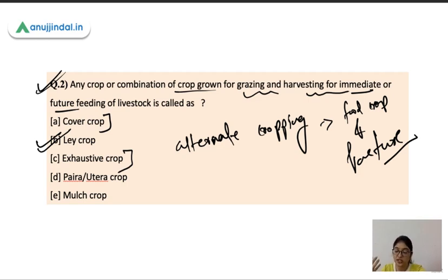Then Paira-Utera crops are your residual crops which are mostly sown before the harvesting or few days before the harvesting of your paddy crop. These are basically sown to utilize the residual moisture of the paddy fields. Then we have mulch crop. The main purpose of mulching is to prevent evaporation losses, stop weed production, and it can also add to the fertility of the soil by adding organic matter. So lay crops are the ones which are grown for the grazing and harvesting for livestock feeding.